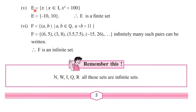Another example: E is the set of all x such that x belongs to integers and x² = 100. Integers include 0, positive, and negative numbers. We have only two numbers whose square is 100 — that is −10 and +10 — and we can count these elements as first and second. Therefore, the set E is a finite set.